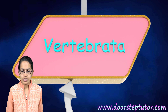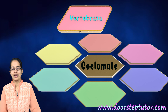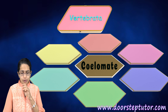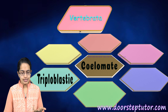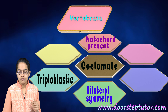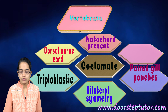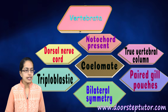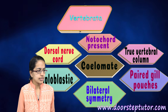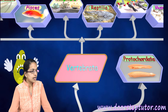The characteristics of these vertebrates are very important. First, they are coelomate. Second, they are triploblastic. They have bilateral symmetry. They have a notochord that is present, and they have a dorsal nerve cord. They also have paired gill pouches. These vertebrates can be further subclassified into six different categories.